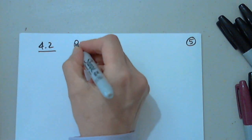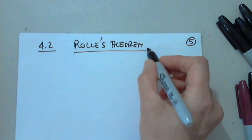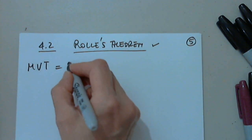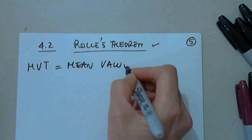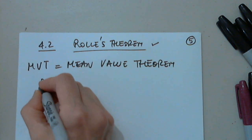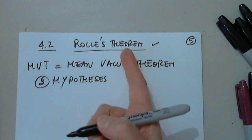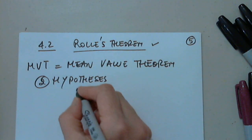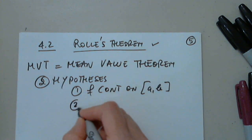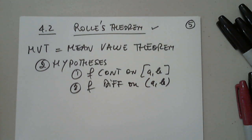So in 4.2, we looked at Rolle's theorem. This was done last time. And now we have to look at something called MVT, mean value theorem. Mean value theorem has only two hypotheses. And they are both coming from Rolle's theorem. Same, but just the first two. Number one, f is continuous on a, b. Number two, f differentiable on a, b.